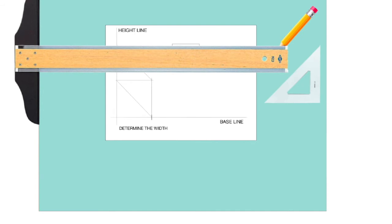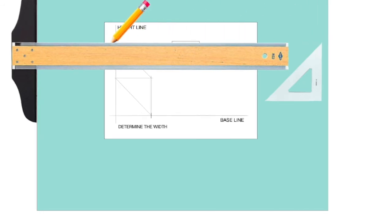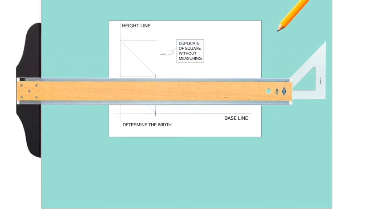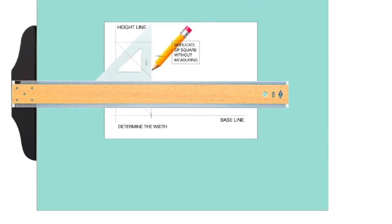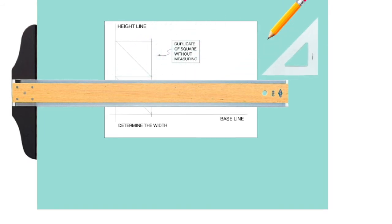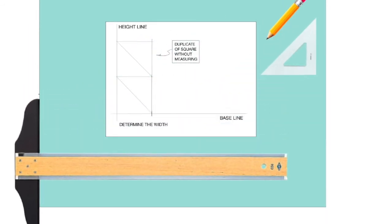Where they cross, we'll put a horizontal line, and then we'll finish the square by adding a vertical line. We've just created a duplicate of the square below, without any measurements.